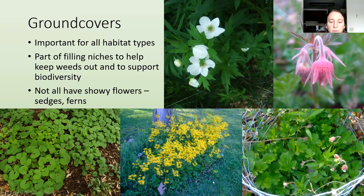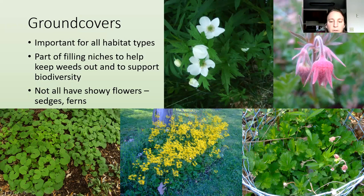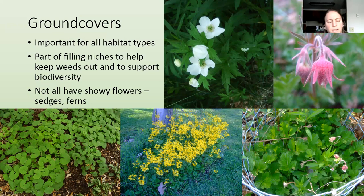Packera aurea with yellow flowers — golden groundsel — is a really tough native ground cover, like a workhorse. If you just need a place covered with nice flowers, it's very helpful. It is pretty aggressive so a lot of stuff will grow with it. Wild ginger is a good shade ground cover with a nice texture to the leaves, even though the flowers aren't that showy. Ferns are also good too.